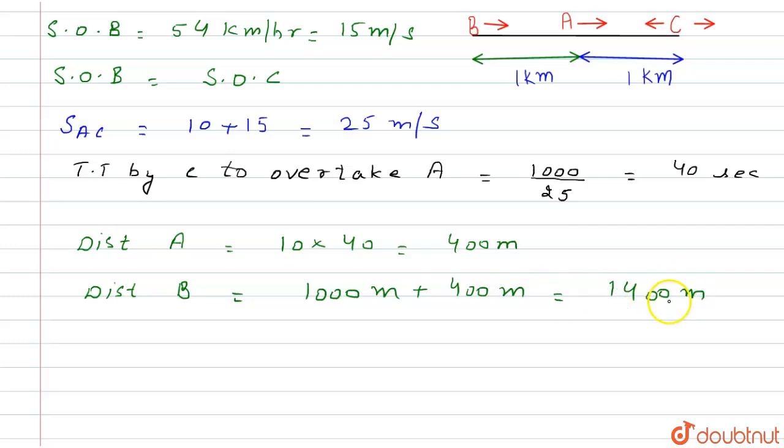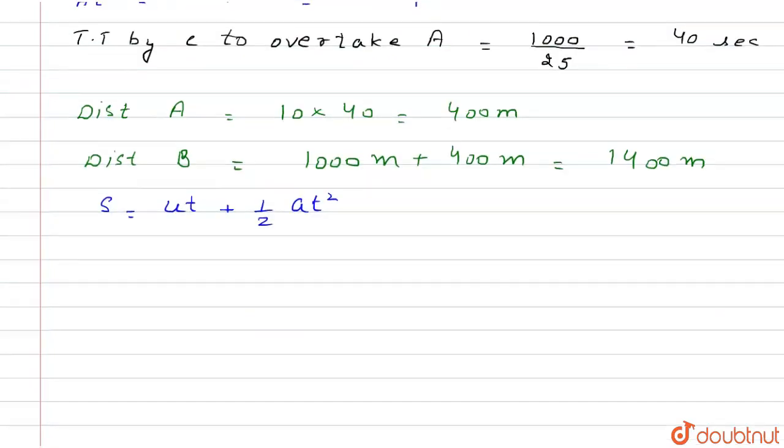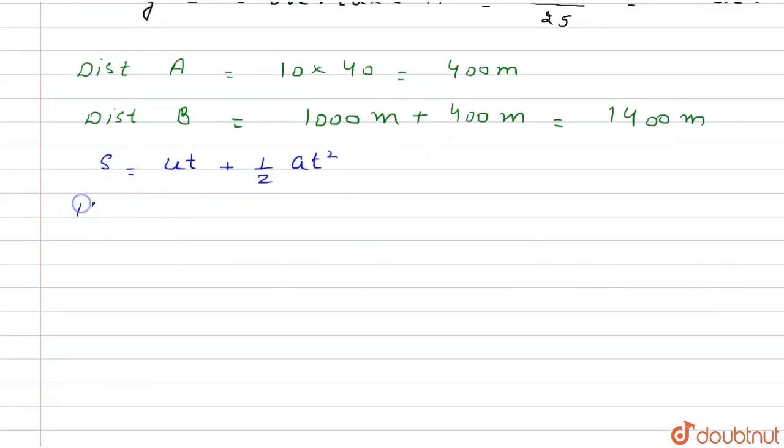Now putting all the values in the formula s = ut + ½at². If we put the values, we get 1400 = 15 × 40 + ½ × a × 40². From here we can calculate the value of a.